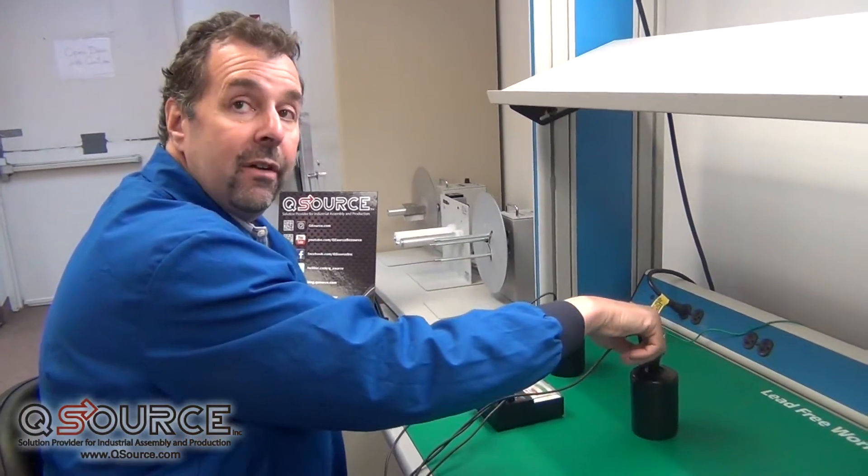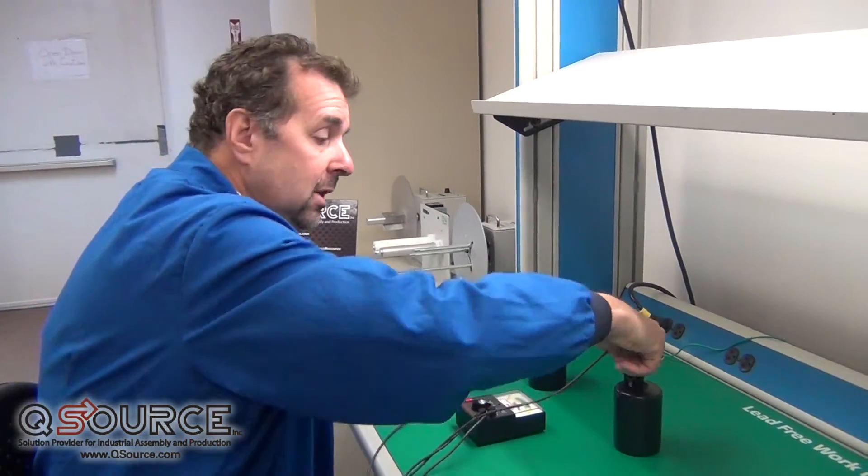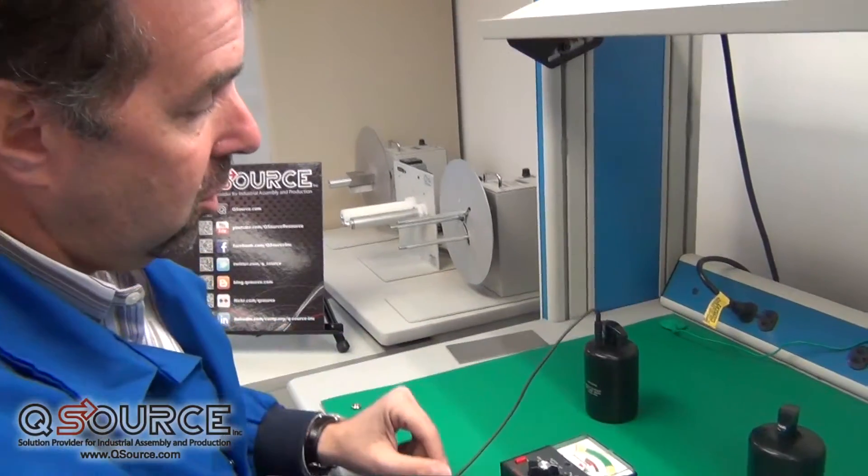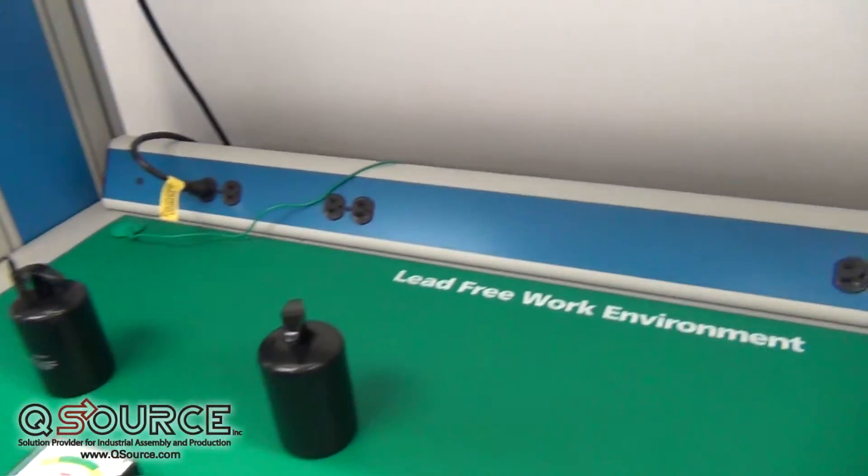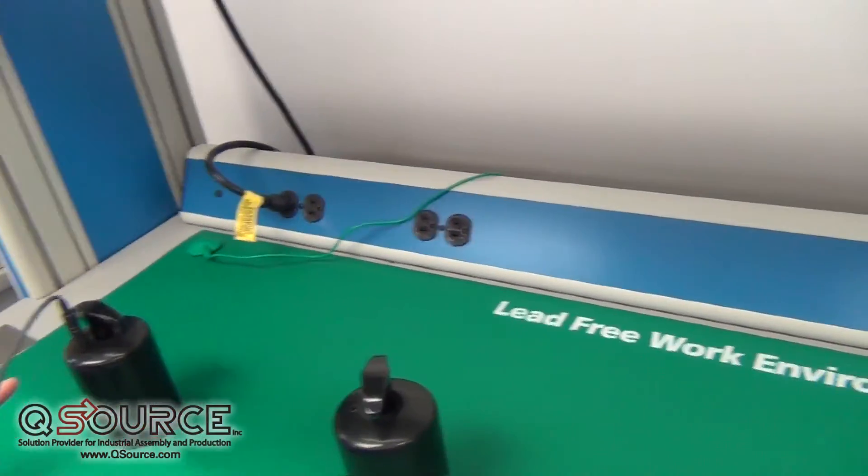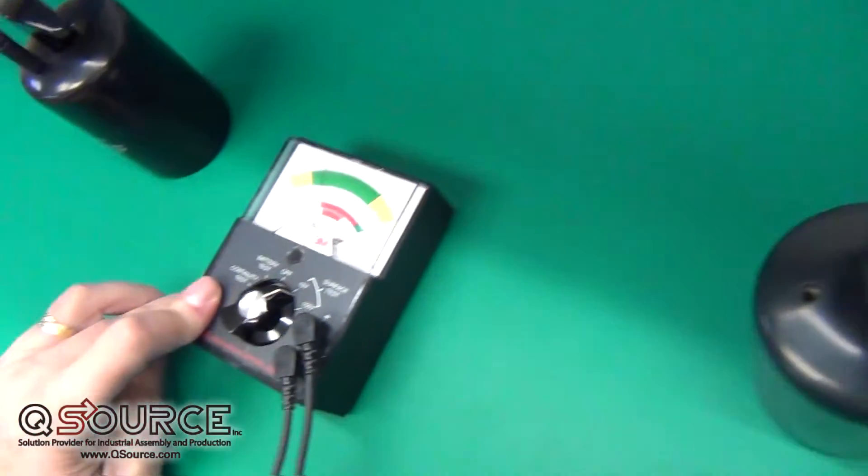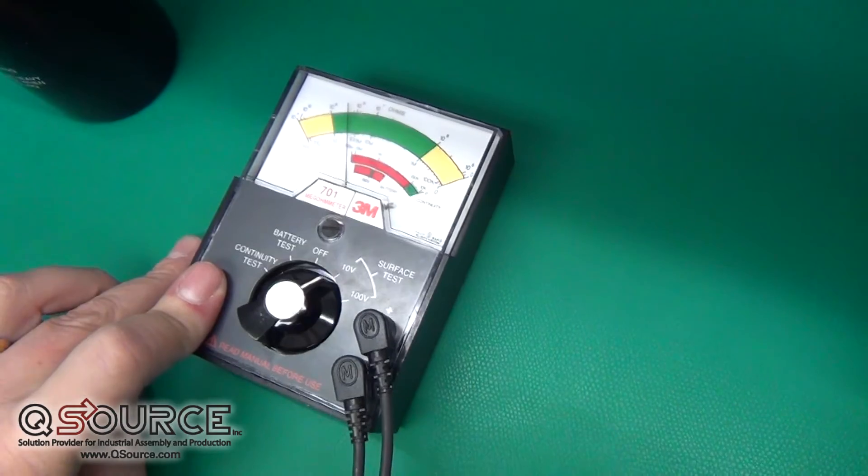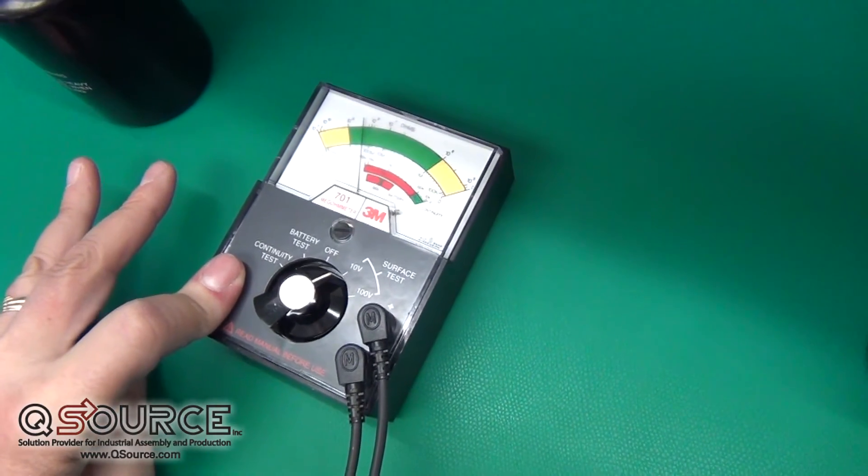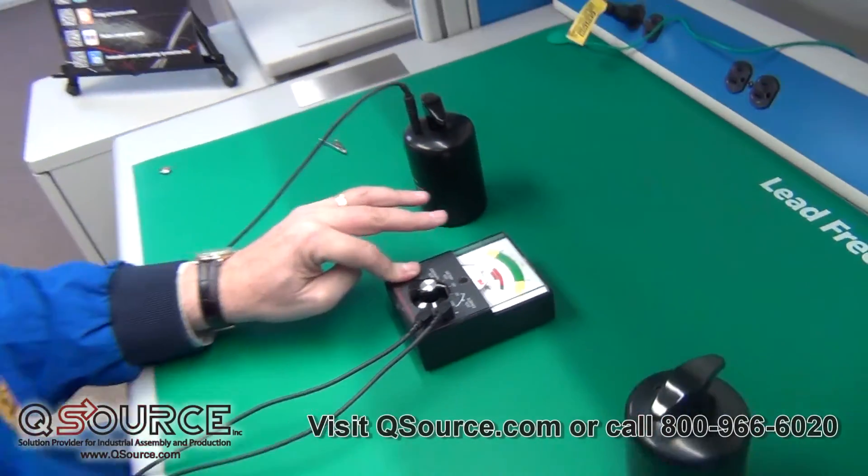The next part of this test is we want to verify that the mat is properly grounded. So we'll take one of the probes and put it into the ground of the electrical outlet, and we'll leave the other five-pound weight on the mat. We can see that any charge generated on the mat will go right to electrical ground at a static dissipative rate.